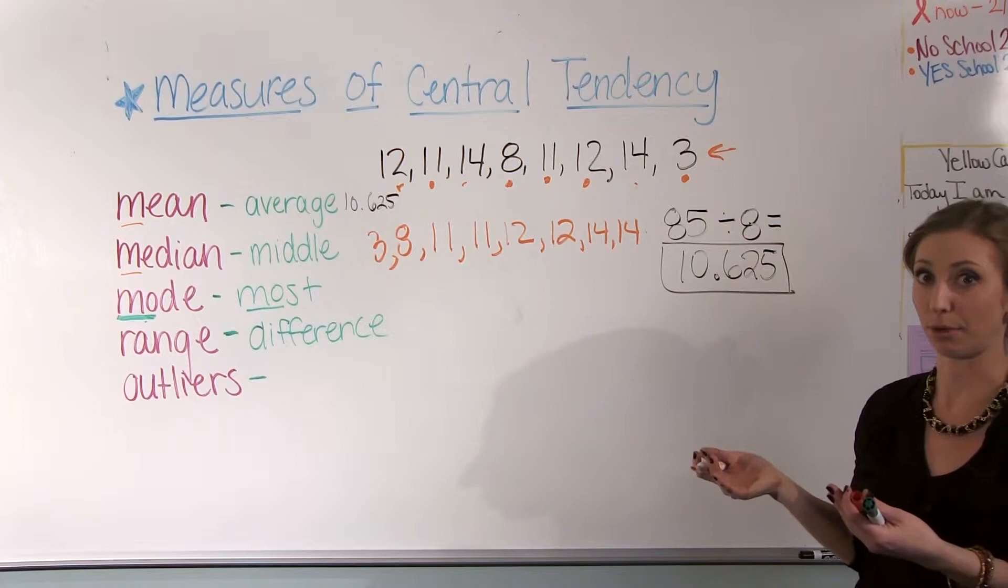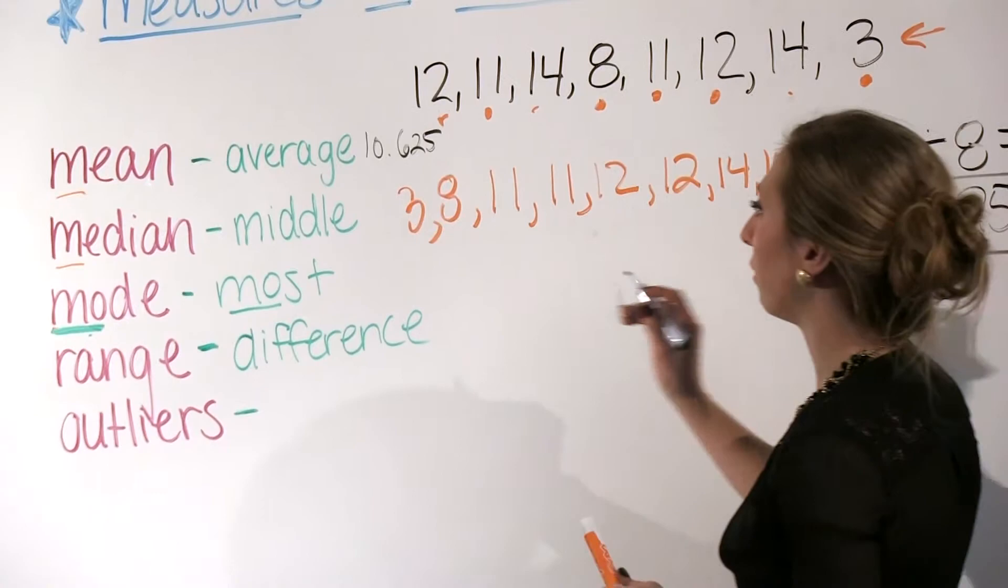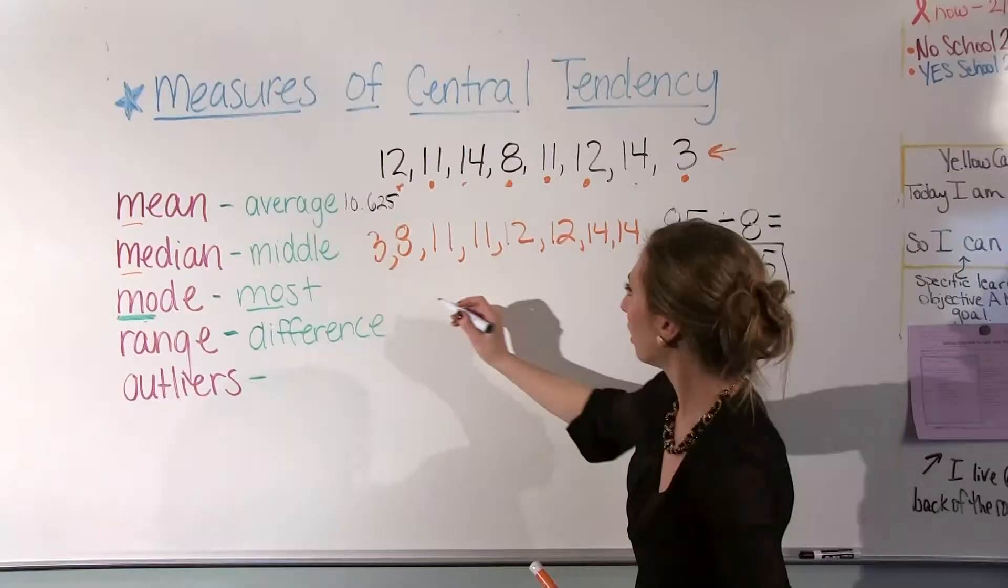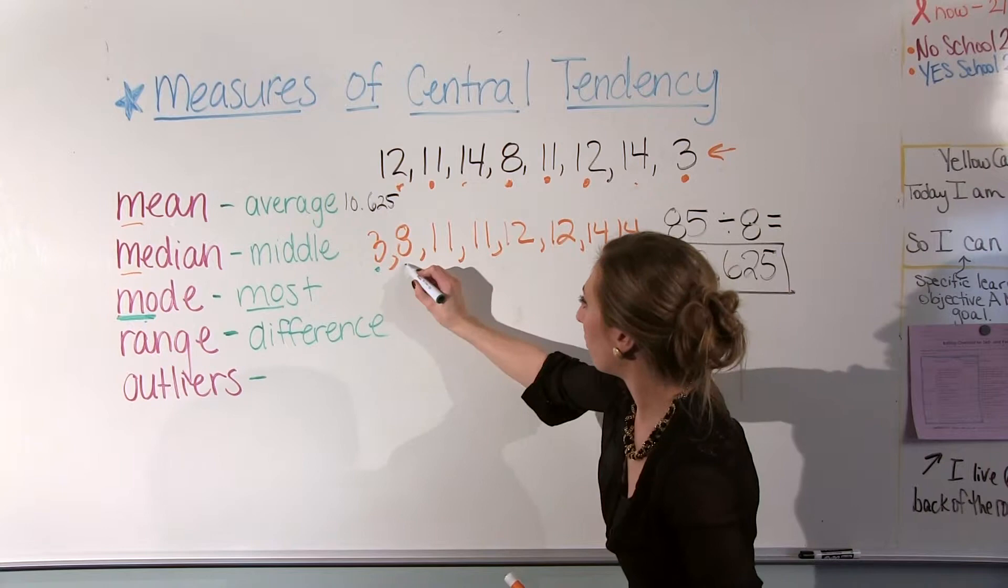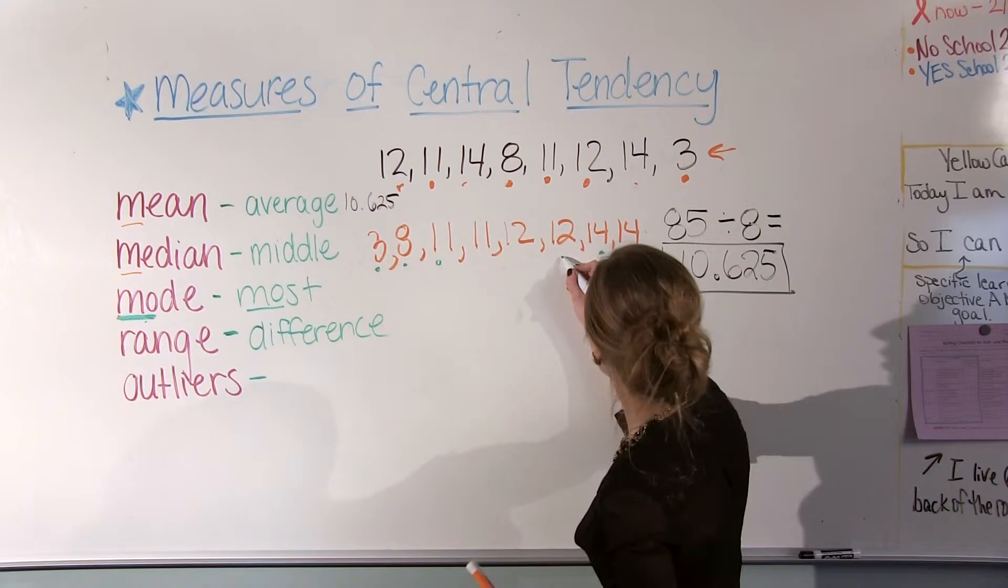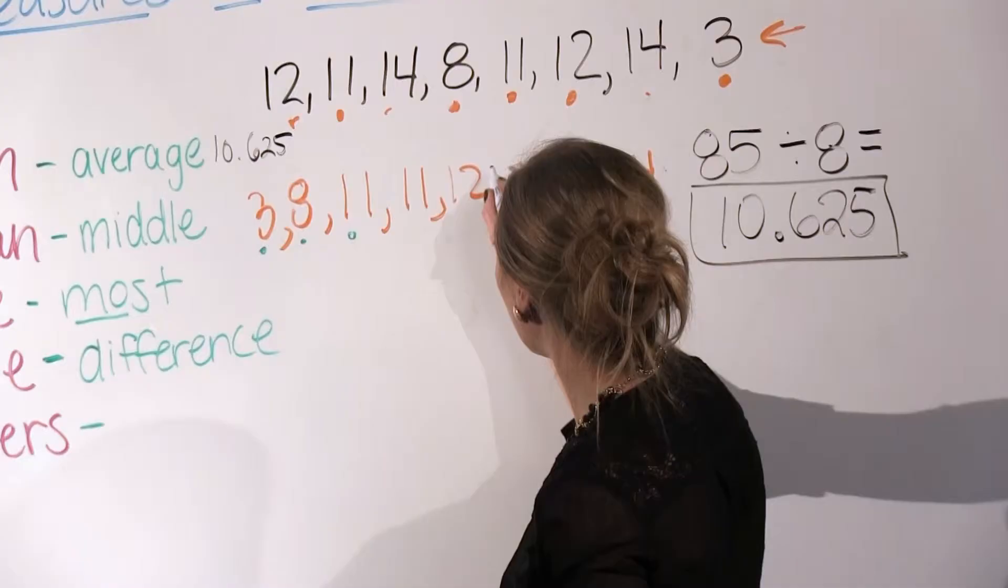So once your numbers are in order, then we can go and we can start finding which one is the middle number. So I'm going to just kind of mark off ones as I count, just so that I can work my way to the middle. Now this set of data is kind of special because if I were to go the whole way to the middle, I'm not really actually at a number.